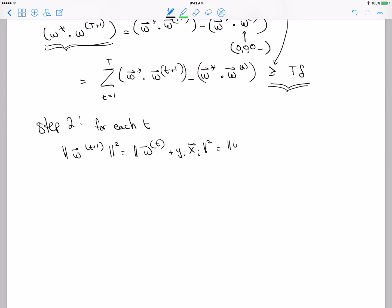So then this thing equals the norm of Wt squared, plus 2yi times Wt dot xi, plus yi squared.